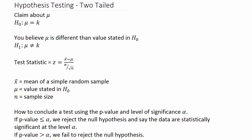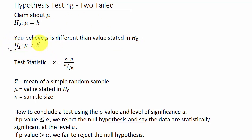Let's look at hypothesis testing where sigma is known and it's a two-tailed test. We have a claim about the population mean: H naught: mu equals some number K. We believe that mu is different than the value stated in the null hypothesis, so our alternate hypothesis is mu is not equal to K.